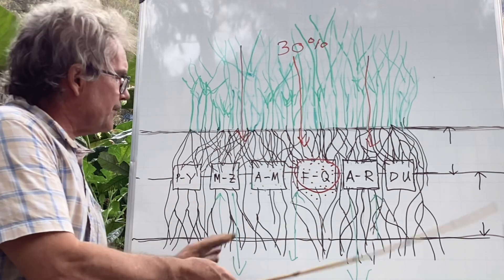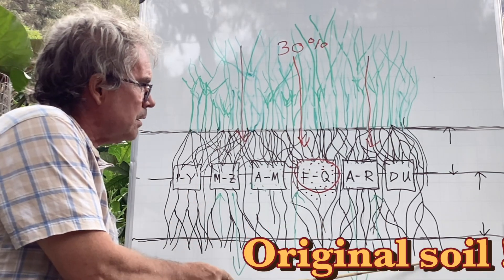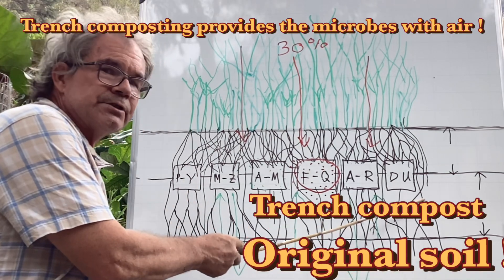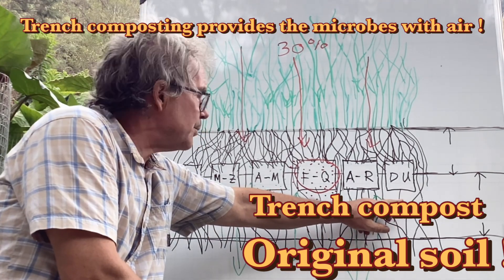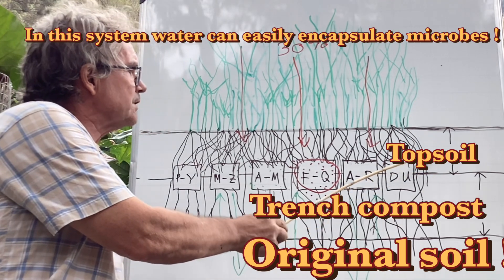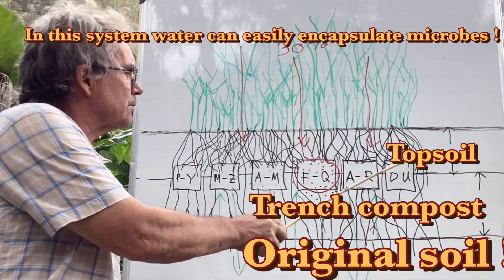We're using these soil batteries, and how we do it I want to explain so everyone can duplicate this. So we have three layers: original soil, trench composting—this is material that is either composted or not finished composting yet—and we have six to eight inches to ten inches of good soil.